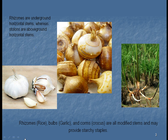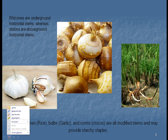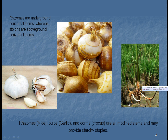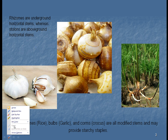Common ways that plants store starch are with things called rhizomes, bulbs, and corms. Here are some pictures of them. This is rice over here. You can see there are little projections coming out — these are called rhizomes. They're just beneath the ground, and besides storing food, they allow the plant to expand itself and grow into other areas.